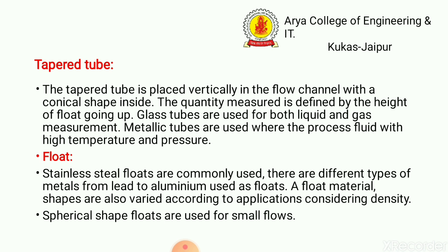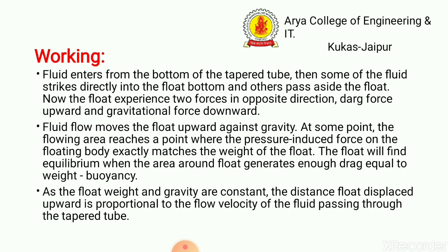Standard stainless steel floats are commonly used in a Rotometer, but different types of metals from lead to aluminum are also used as floats. The float material and shape are varied according to the application, considering density. Spherical shaped floats are used for small floats.